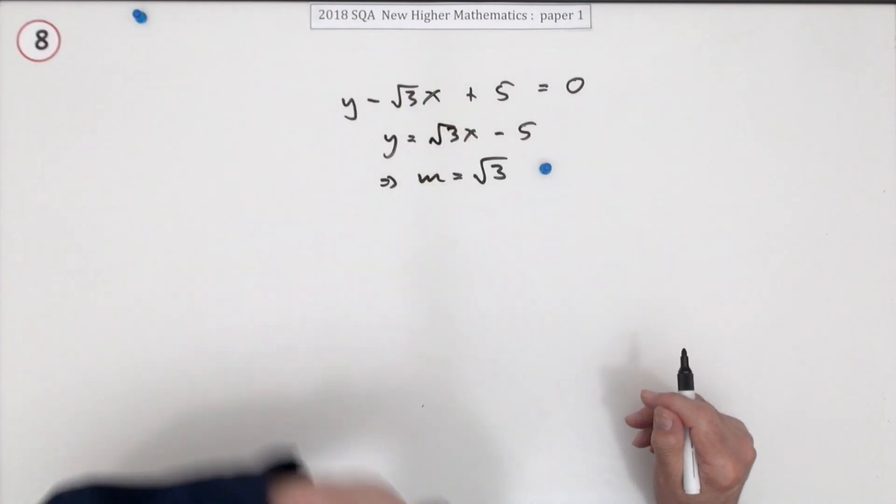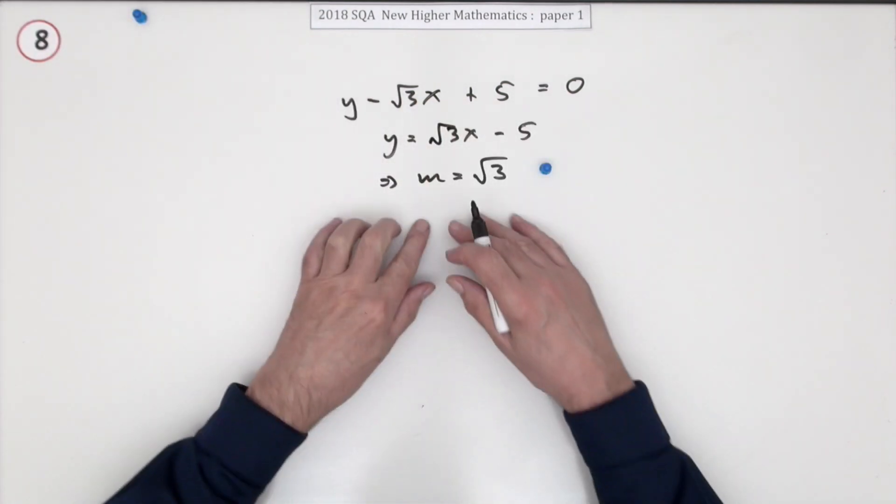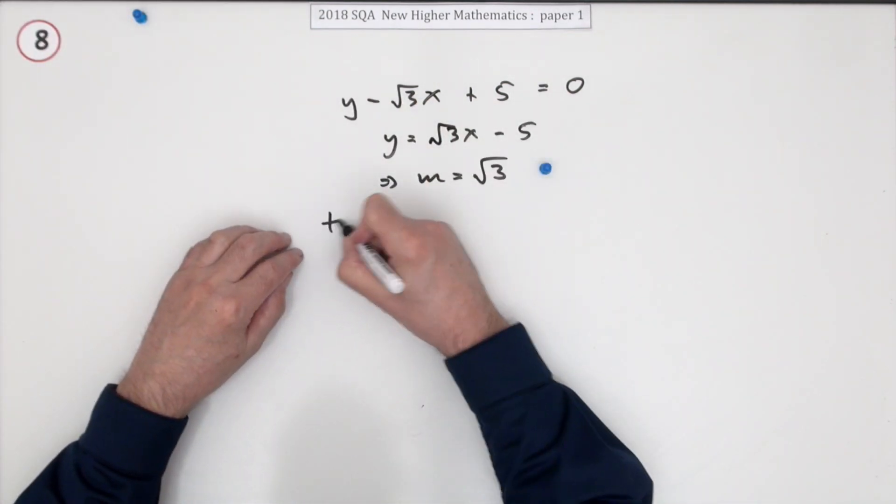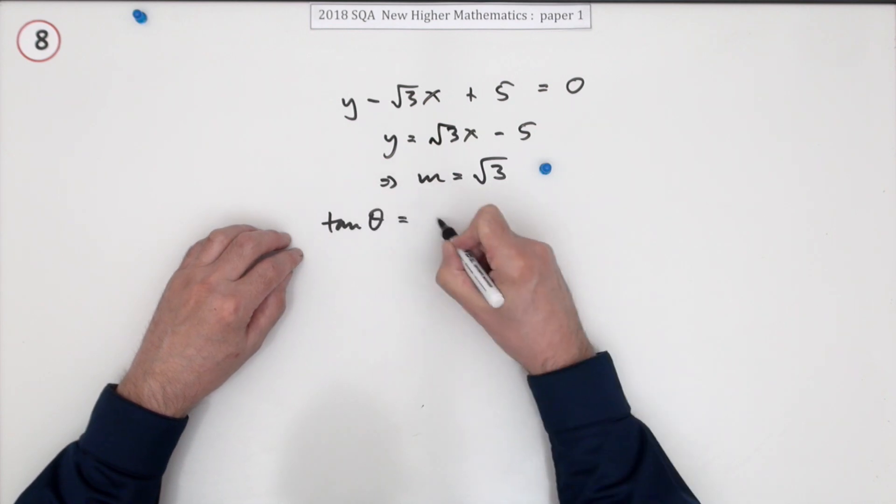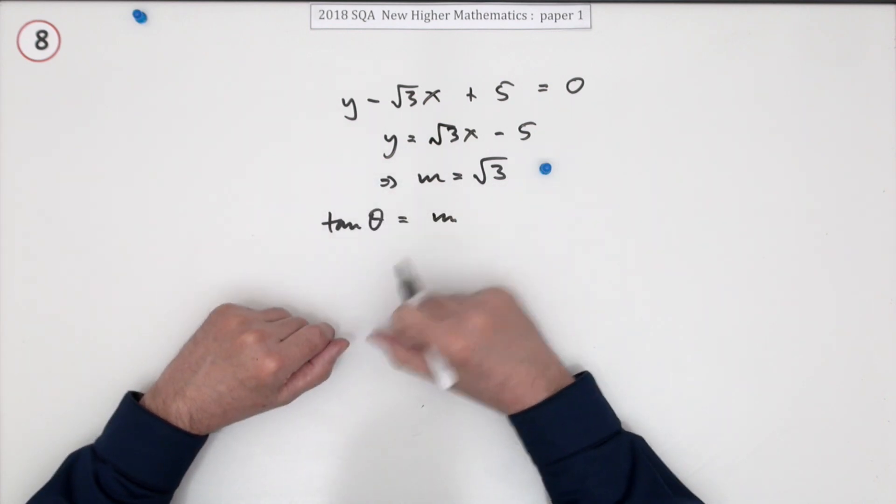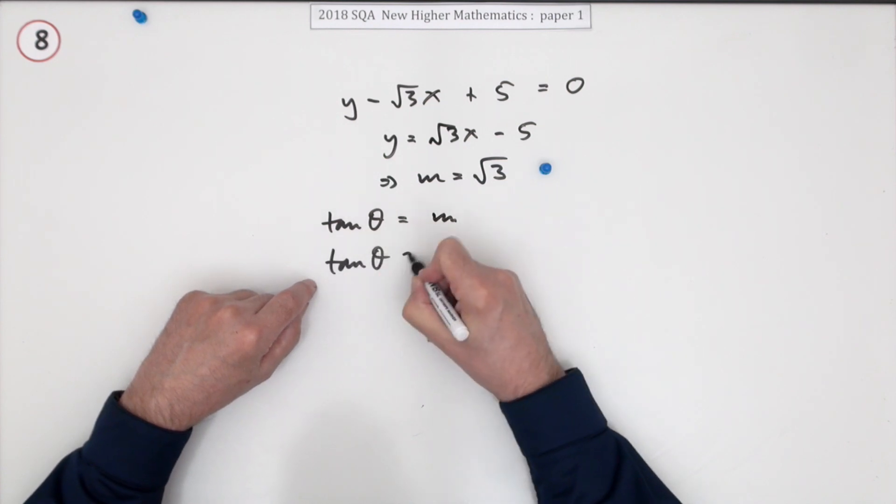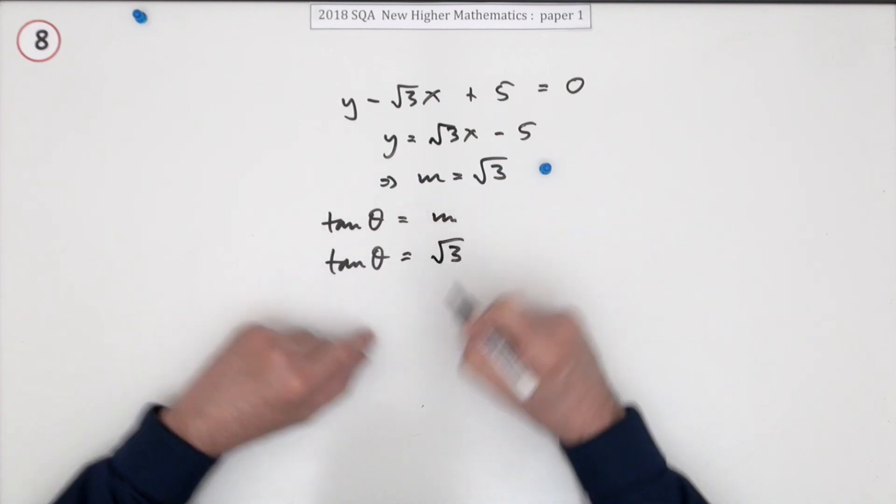There's a mark. So what's the angle? Well, you know that the tangent of the angle is equal to the gradient. That's not worth a mark yet. So the tangent of the angle is going to be root 3.